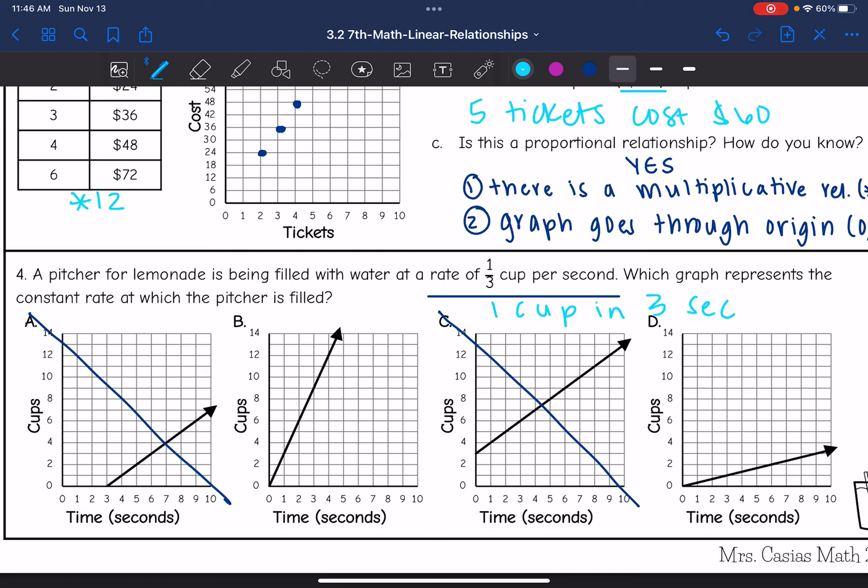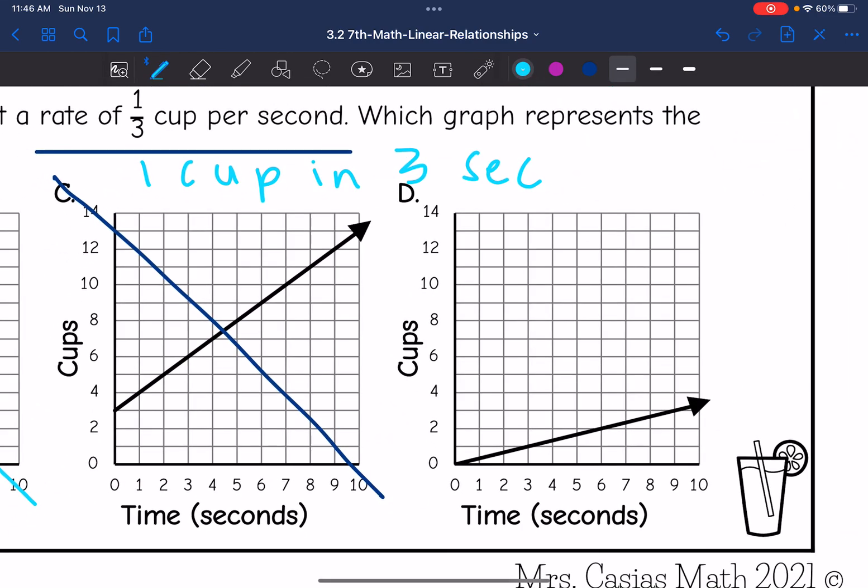So I need a graph that's showing one cup in three seconds. So B is showing three cups in one second. So that one's not going to work. So it must be D. If we look at D at one, it does look like it's about a third of the way full. And then after three seconds, I have that first full cup. So this one is D.